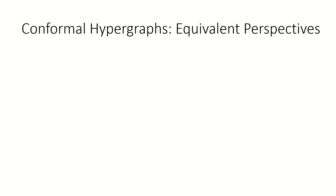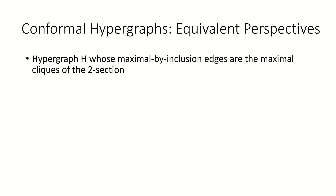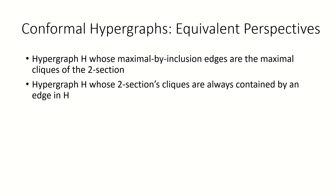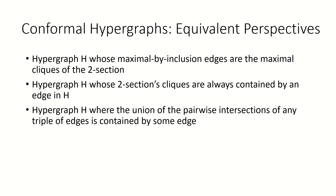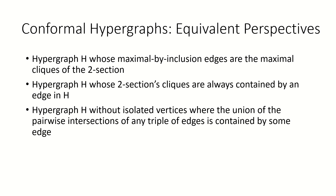Isn't it neat that we now have three equivalent ways of describing conformal hypergraphs? They're the hypergraphs whose maximal by-inclusion edges are the maximal cliques of the two-section; or equivalently, they're the hypergraphs whose two-section's cliques are always contained by some hypergraph edge; or equivalently, they're the hypergraphs where the union of the pairwise intersections of any three edges is contained by some edge.